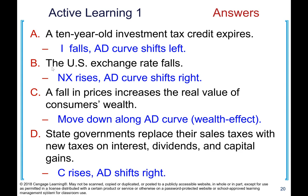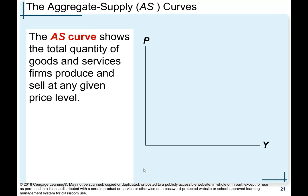Scenario C: a fall in prices increases the real value of consumers' wealth — this is not changing a component of aggregate demand; it is changing the price level on the vertical axis, so this is a movement along the aggregate demand curve, not a shift. Scenario D: state governments replace sales taxes with new taxes on interest, dividends, and capital gains — this increases consumption spending, causing a rightward shift of aggregate demand.